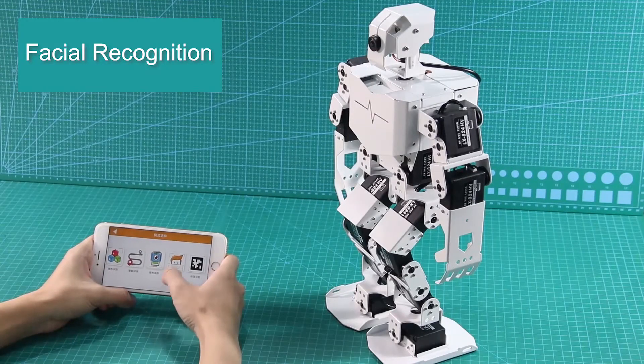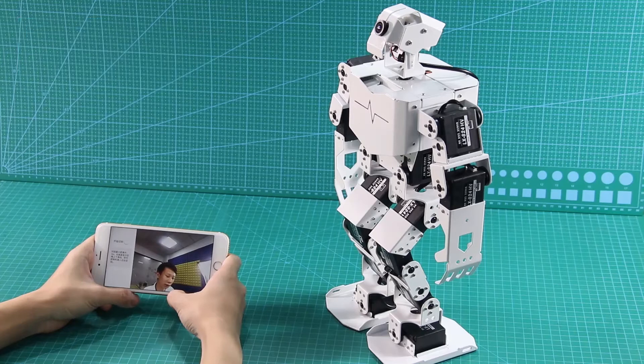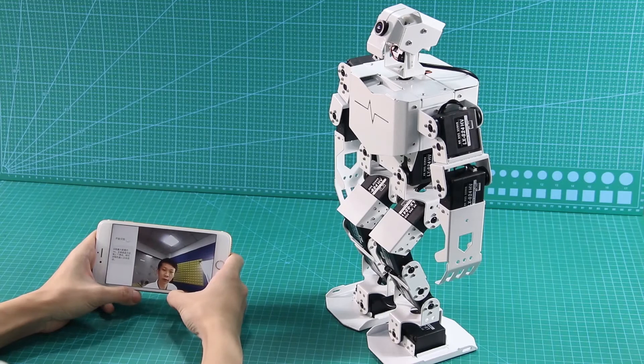Next game is Facial Recognition. TonyPi will look around to search for a humanoid face within one meter. It will wave to greet when a face is detected.